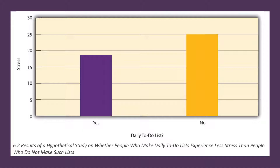Figure 6.2 shows data from a hypothetical study on the relationship between whether people make a daily to-do list and stress. It's unclear whether this is an experiment or a correlational study because it's unclear whether the independent variable was manipulated. If the researcher randomly assigns some participants to make daily to-do lists and others not to, then it's an experiment. If the researcher simply asked participants whether they made daily to-do lists, then it's a correlational study. If it was an experiment, it could be concluded that making daily to-do lists reduced stress. If correlational, it could only be concluded that the variables are statistically related — perhaps stress has a negative effect on people's ability to plan ahead (the directionality problem), or perhaps more conscientious people are more likely to make to-do lists and less likely to be stressed (the third variable problem).